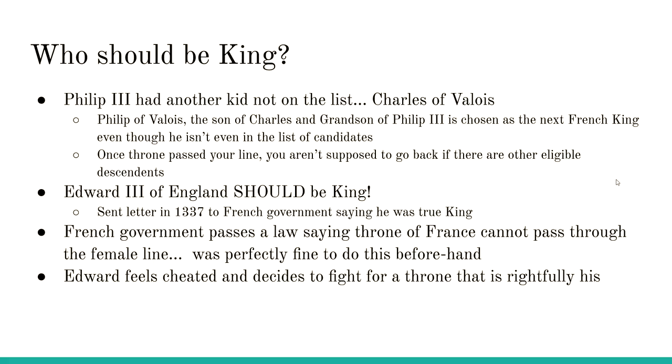But what happened? Philip III had another child not on the list — Philip of Valois, son of Charles and grandson of Philip III. He was chosen as the next king, even though he wasn't even a candidate. Edward III was pretty angry. Edward III sent a letter to the French government in 1337 demanding his crown, saying, 'I am the true king of France.' The French government had no intention of letting this English monarch become their king.